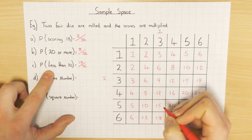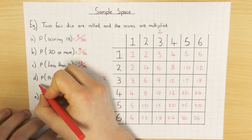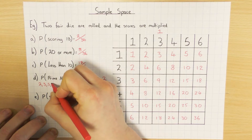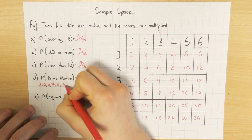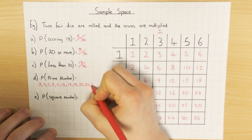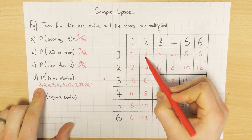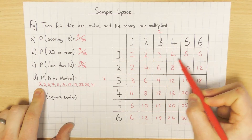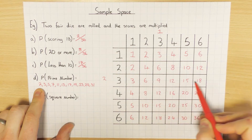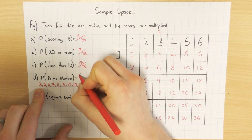Part d: what's the probability of getting a prime number? It's always a good idea to list the prime numbers - bear in mind that one is not a prime number. The first prime number is 2, then 3, 5, 7, 11, 13, 17, 19, 23, 29, and 31. Looking through the sample space for these primes: there are 6 prime numbers, so it's 6 out of 36 possible outcomes.